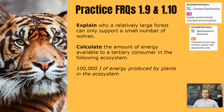Our practice FRQs for topics 1.9 and 1.10 today will cover two different skills: explaining an environmental concept or process, and calculating an accurate answer with units. First, explain why a relatively large forest can only support a small number of wolves. Then, calculate the amount of energy available to a tertiary consumer in an ecosystem where there are 100,000 joules of energy produced by plants.